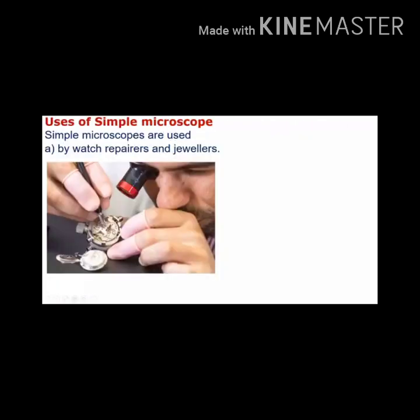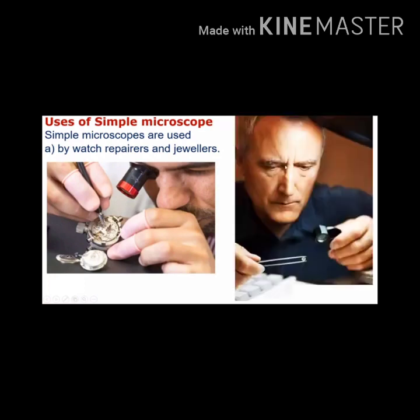Now let us see the uses of the simple microscope. Simple microscopes are used in watch repair - watch parts are very minute so the simple microscope is used to see them enlarged. This microscope is also used in jewelry shops to examine gems and determine whether they are original or duplicate.